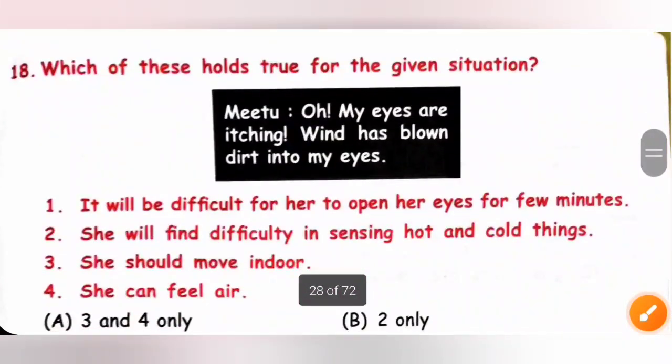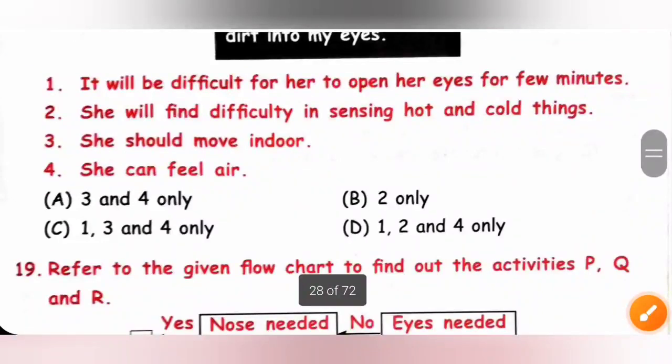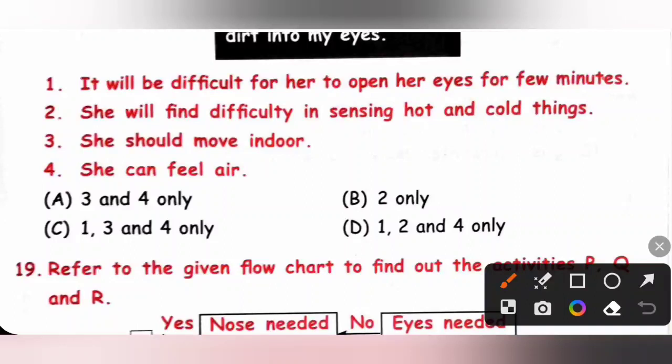Eighteenth. Which of these hold true for the given situation? Meethu. Oh, my eyes are itching. Wind has blown dirt into my eyes. So, one. It will be difficult for her to open her eyes for few minutes. Yes. Two. She will find difficulty in sensing hot and cold things. No. So, to sense hot and cold things, she will use sense of feel that is skin. She won't use eyes. Third. She should move indoor. Yes. Because it's windy outside. Fourth one. She can feel air. Yes. She can feel air. So, one, three, four only. One, three, four only. Option C is the correct answer.